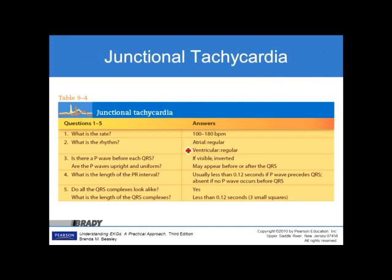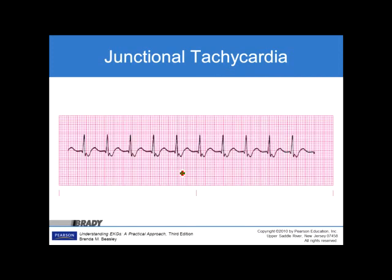For junctional tachycardia: P waves, if visible, are inverted and may appear before or after the QRS — there will be no P wave or the P waves will be inverted. The rate is greater than 100 beats per minute, which is why it is identified as a tachycardic rhythm. The rhythm is regular, the PR interval is usually about 0.12 seconds but less than 0.20 seconds, and QRS complexes all look alike at about 0.12 seconds or three small boxes in duration.